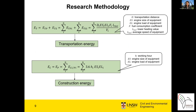Transportation energy includes transporting construction elements from factories to plants, and then transporting modules to the job site. It is affected by transportation distance and equipment information such as engine size and engine load. Construction energy includes off-site and on-site construction, and is affected by the duration of activities and equipment information. It should be noted that the embodied energy of module manufacturing is not a simple task to quantify, because the manufacturing process does not belong to a single project — a particular factory produces modules for several projects at the same time.